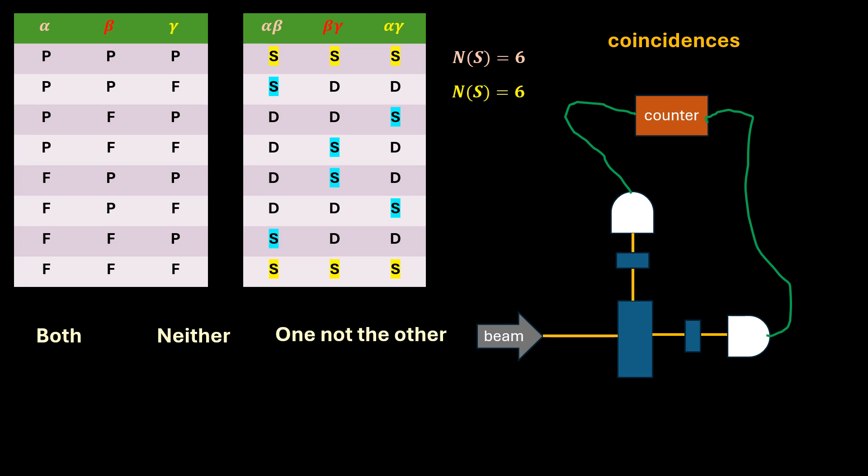And how many times will the photons go through one but not the other? That is 12 times. Total number of times the experiment is run is 24. So, the probabilities for these possibilities are as follows.